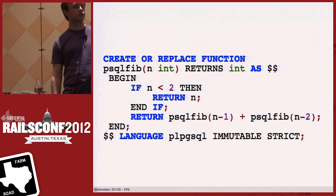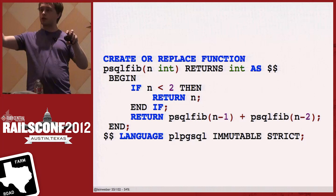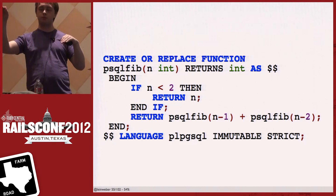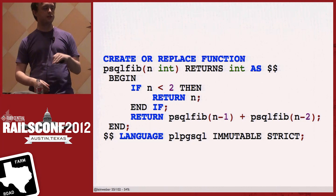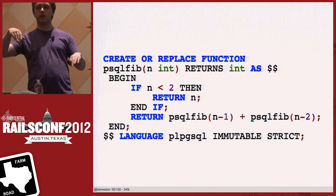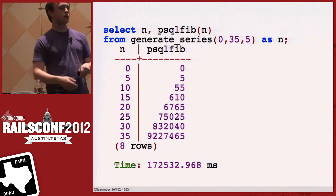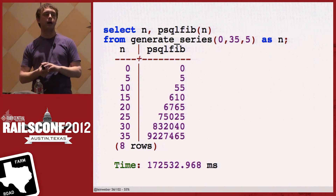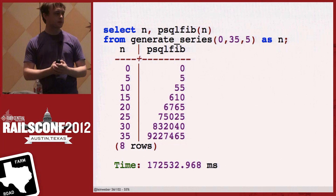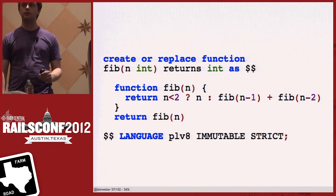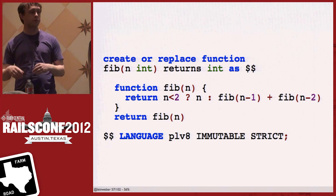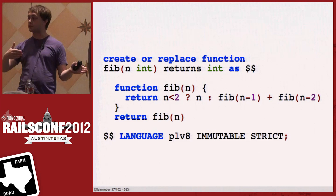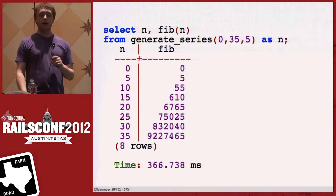At the top you create the function, give it a name, say what it returns. Inside the double dollar signs is another string literal — everything between them is the program body. Then you give it the language type PLPGSQL. 'IMMUTABLE STRICT' are hints to Postgres that it can memoize results and be smart about execution. If you select the function from generate_series in fives from zero to 35, you get results — fairly slow, about three minutes. Now the same thing in PLV8: the same header/footer function declaration, but in the middle I have JavaScript. It's the same implementation but in JavaScript, and it's much faster because of V8 compiling down to native code.